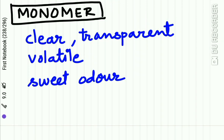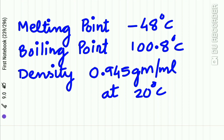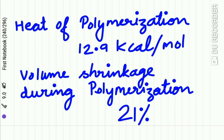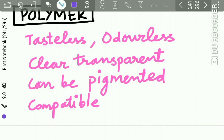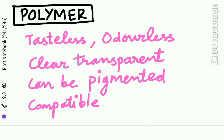The monomer, methyl methacrylate, is a clear transparent liquid. It is volatile and has a sweet odor. The melting point of the monomer is minus 48°C, while the boiling point is 100.8°C. The density of the monomer is 0.945 g/mL at 20°C. The heat of polymerization is 12.9 kilocalories per mole. The volume shrinkage during polymerization is 21%.